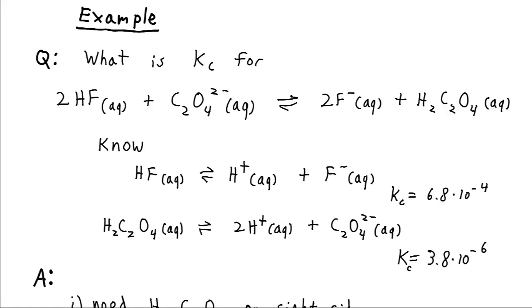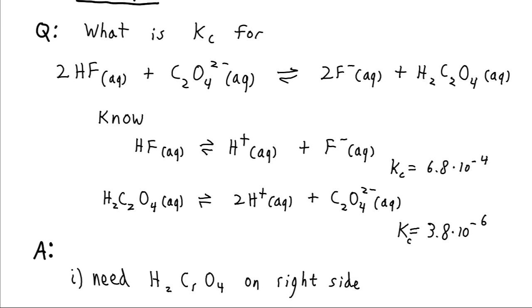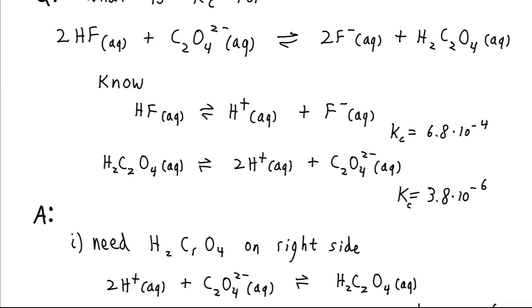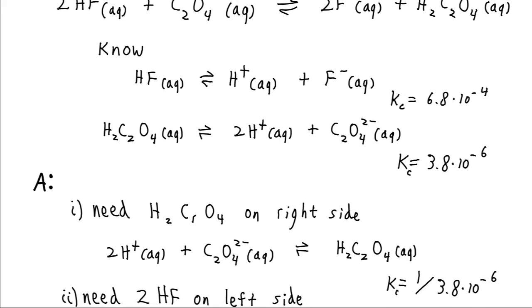So something we might start noting is that our oxalic acid is on the right side in the equation that we desire to express, but in our tabulated information it's on the left side. So we're going to need to fix that, which is pretty straightforward. We just flip this whole reaction here and put the products on the reactant side and the reactants on the product side. And the only catch is that since we've flipped it, that's going to change the equilibrium constant. So it's going to become the reciprocal of the previous value, 1 divided by that 3.8 times 10 to the minus 6.